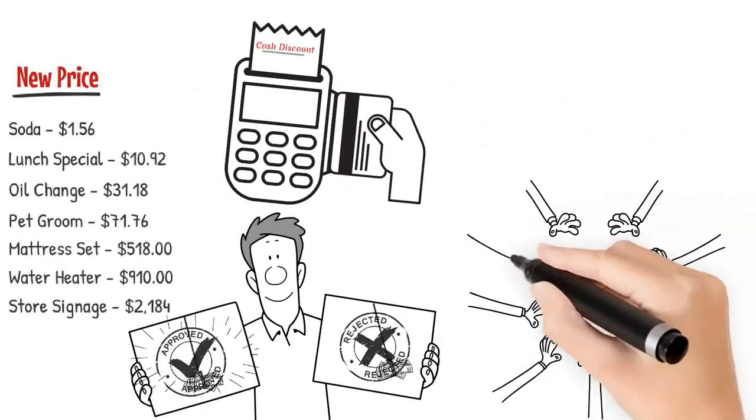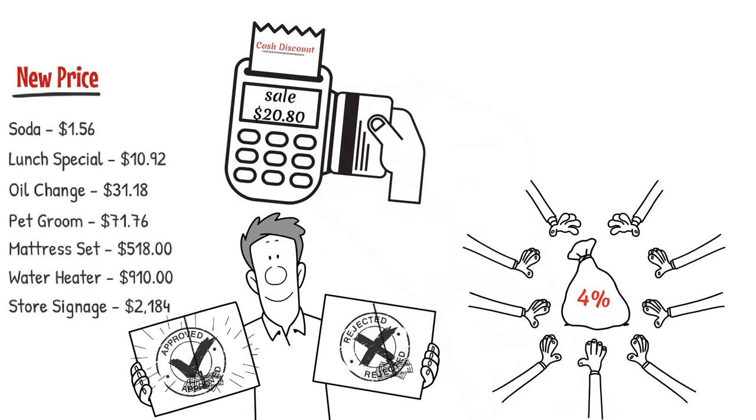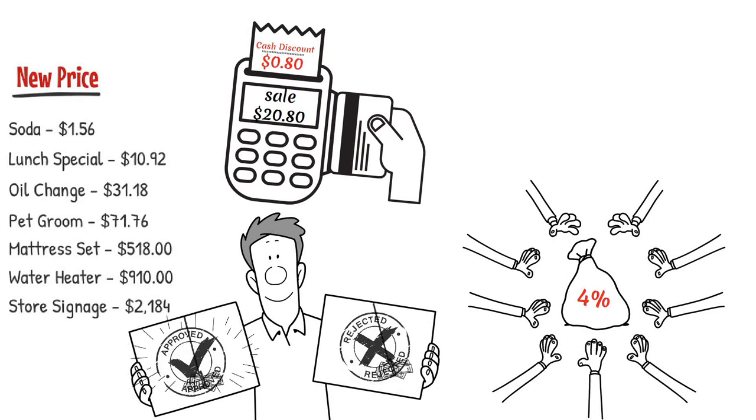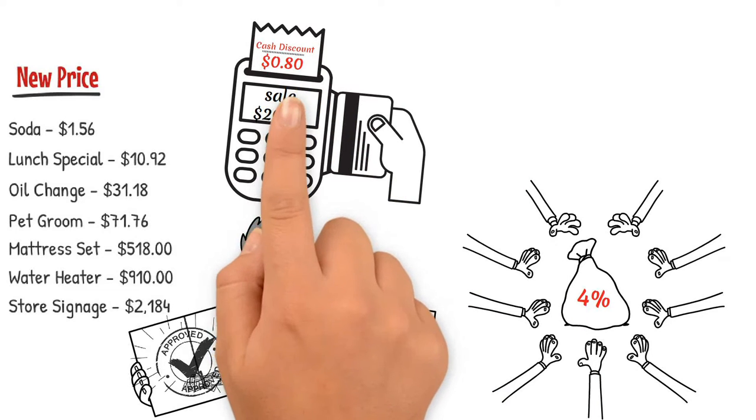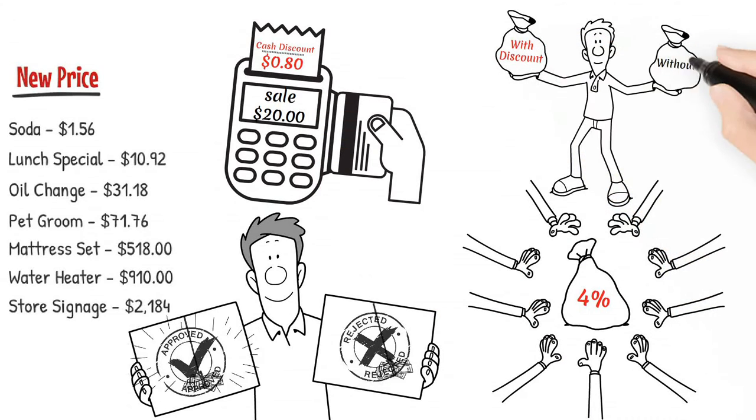For example, if you offered a 4% cash discount, then that $20.80 sale would reflect $0.80 in cash discount on the receipt and bring the price back to today's price of $20. Both parties are break-even with today's price and profit.